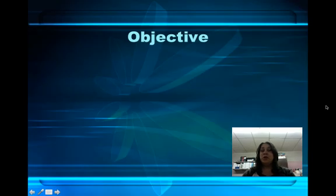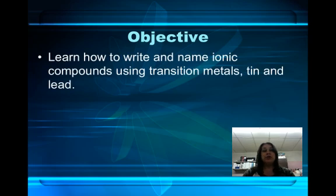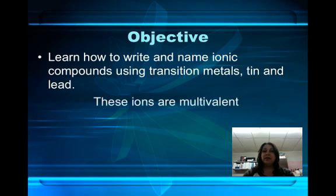Hi everyone, this is the fourth Sheehan video in how to name and write ionic compounds. The objective of this video is to learn how to write and name ionic compounds using transition metals, tin, and lead. These particular cations are multivalent, which means they can have more than one charge.